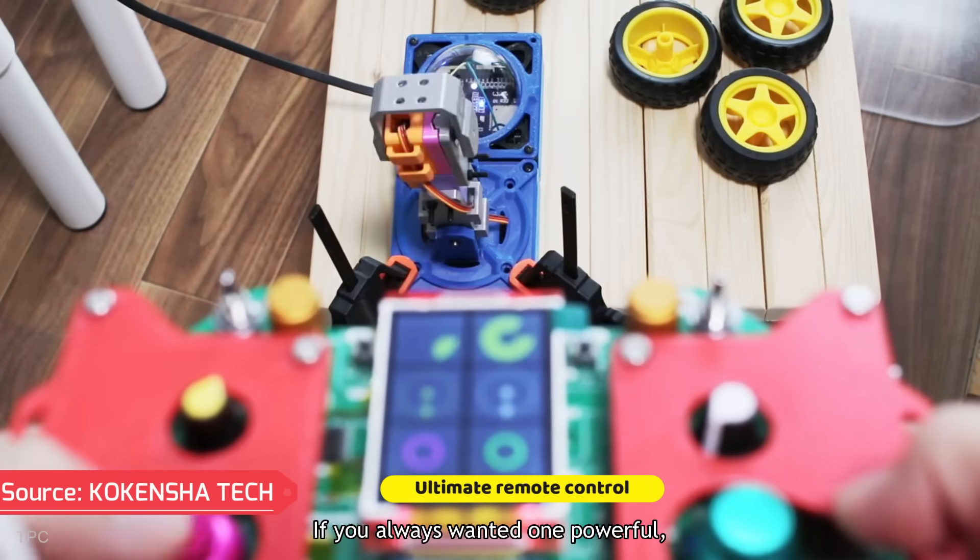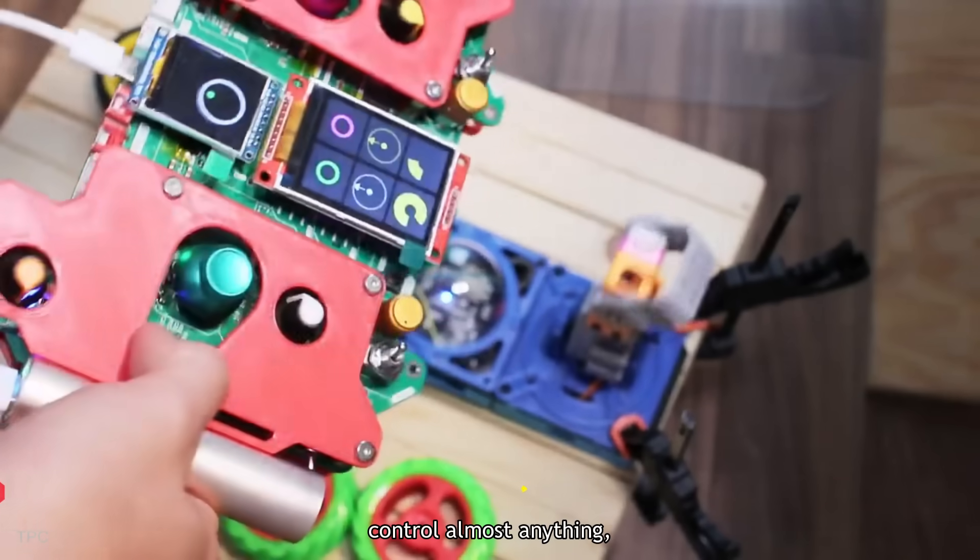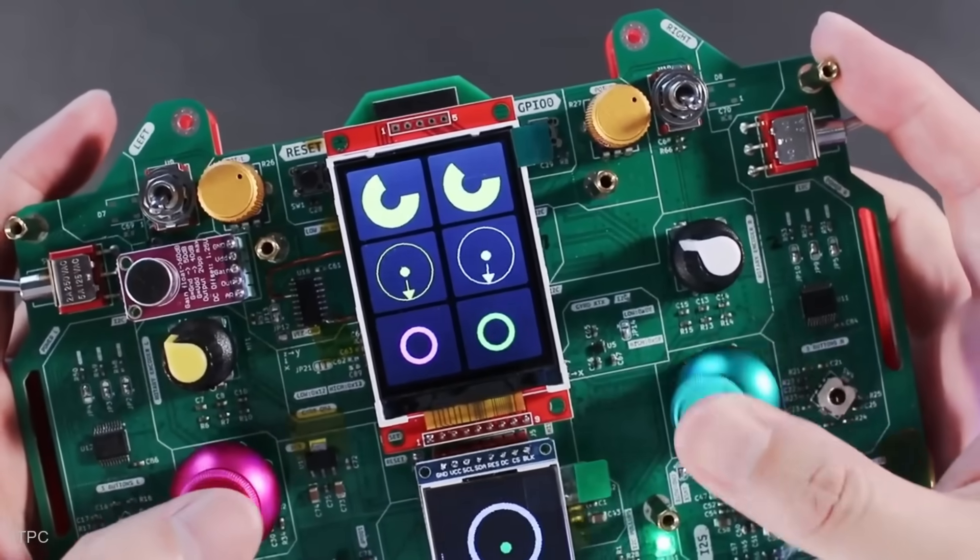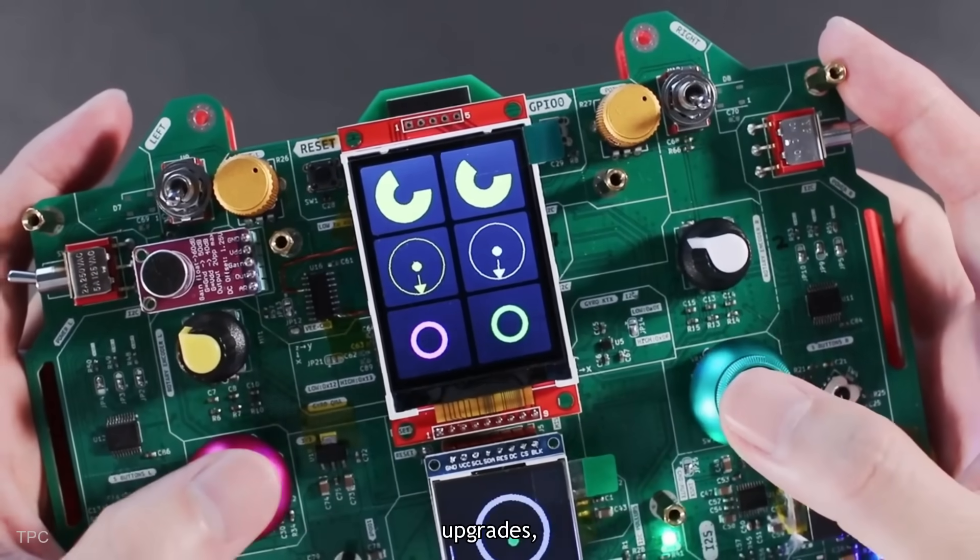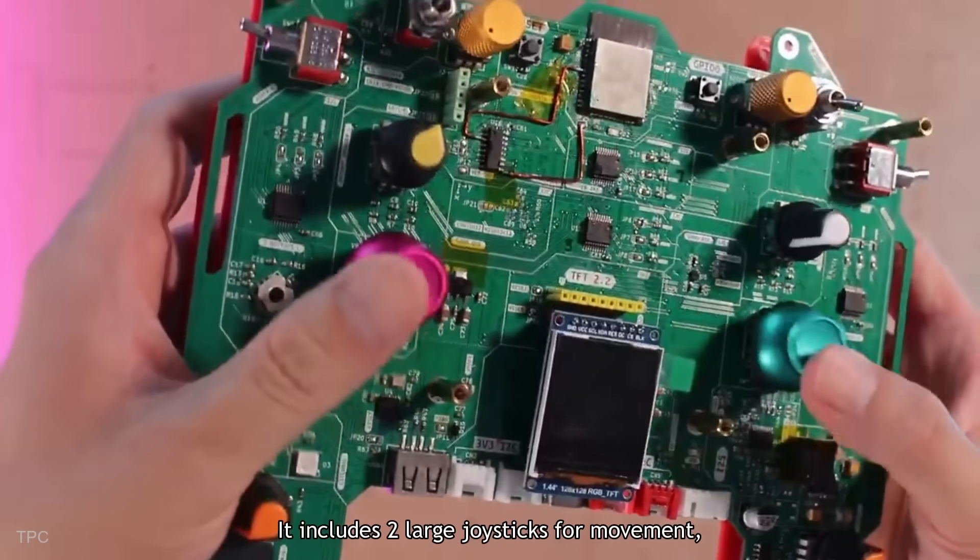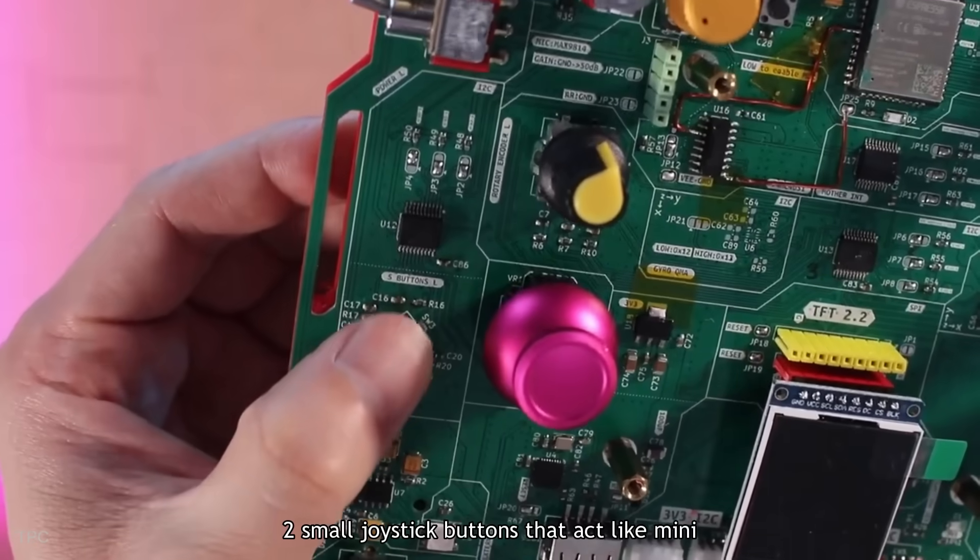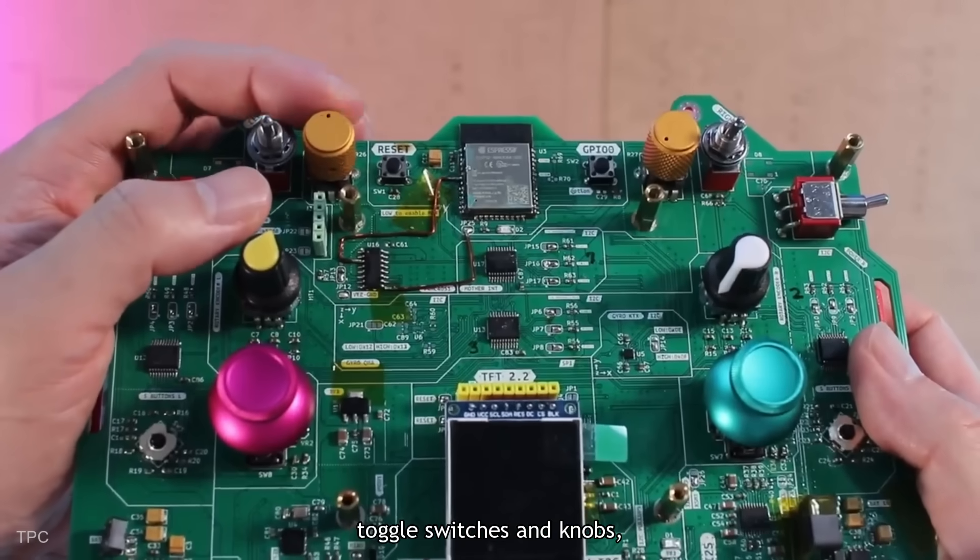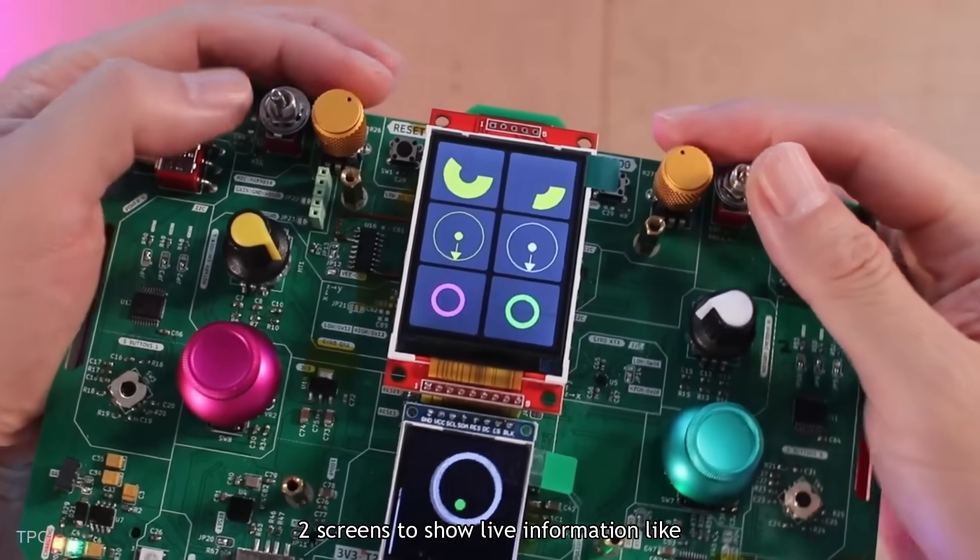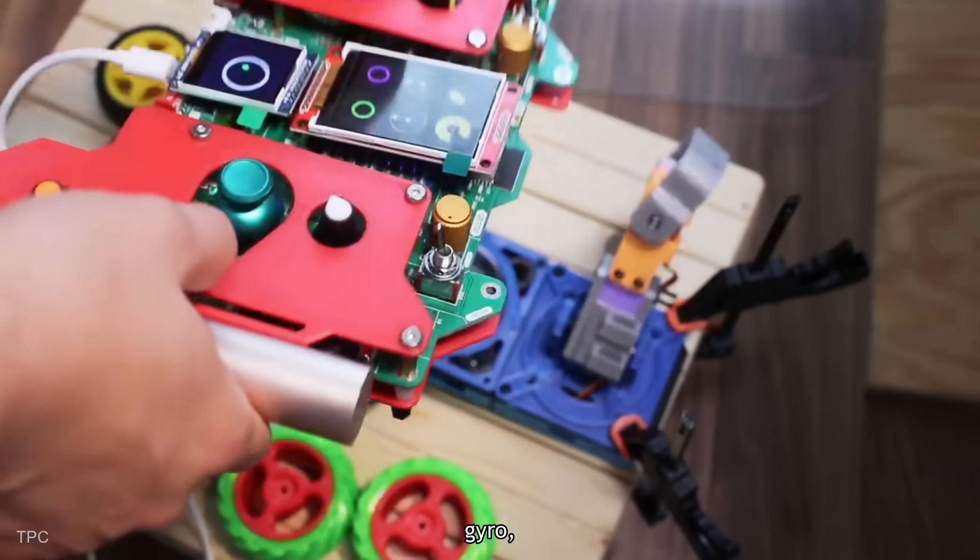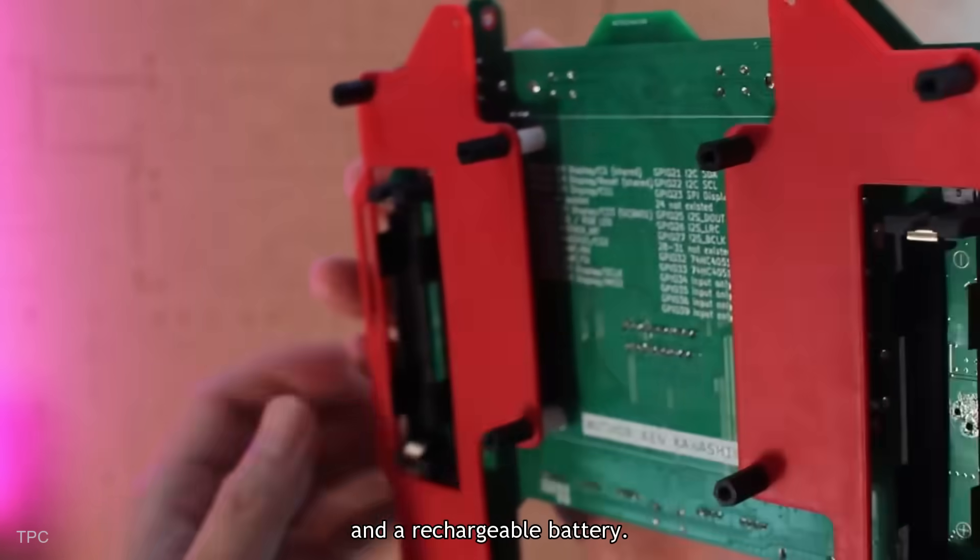Number 10. If you always wanted one powerful, all-in-one controller that can wirelessly control almost anything – robots, vehicles, lights, or custom devices – and also be flexible enough for future upgrades, then this project is just for you. It includes two large joysticks for movement, two small joystick buttons that act like mini-arrow keys, toggle switches and knobs, two screens to show live information like sensor data, speakers and a microphone, a motion sensor, gyro, and a rechargeable battery.